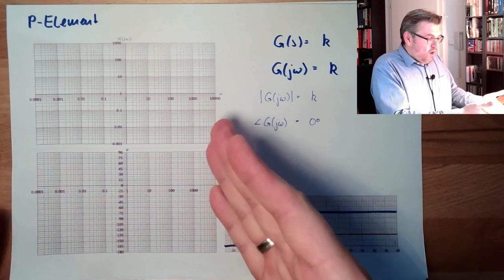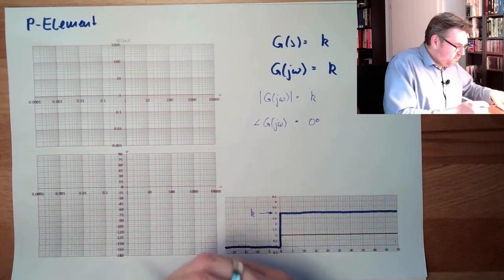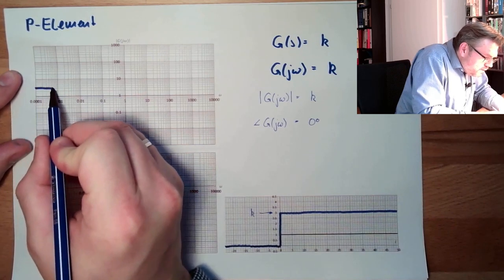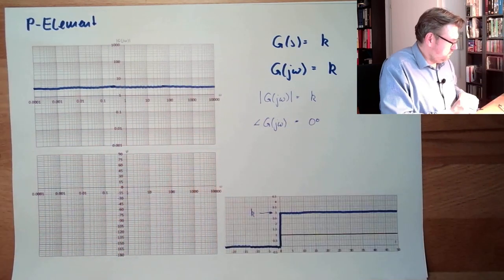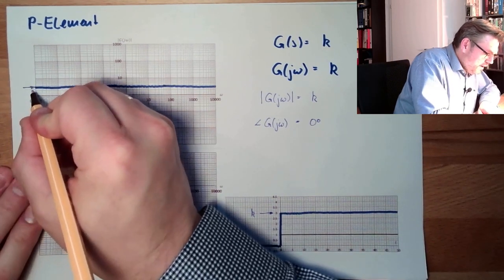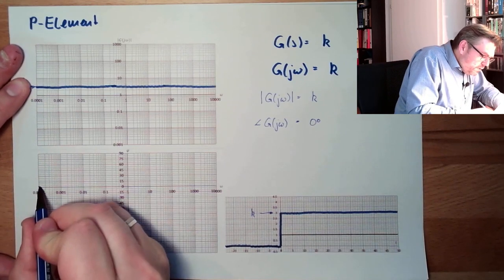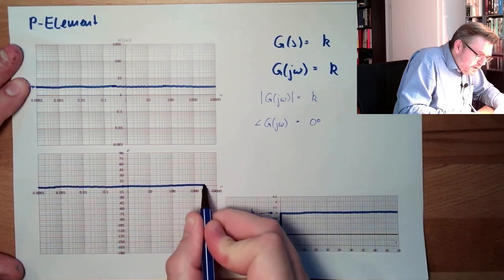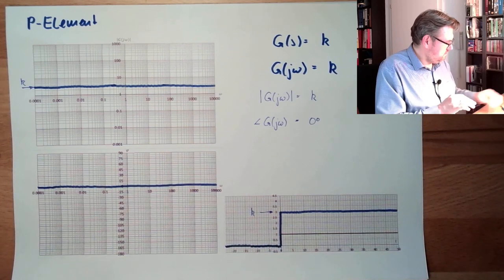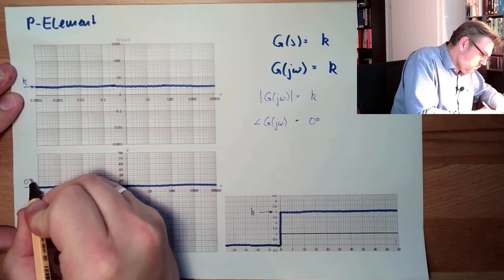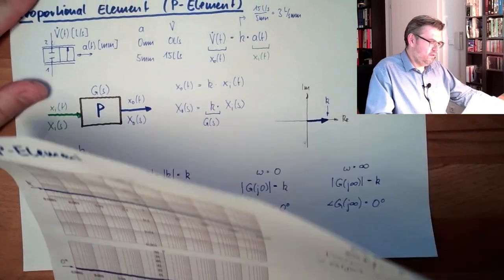Looking at the frequency response — the absolute value is always k. With k equal to three, it remains at three regardless of the frequency, constant at k. The argument is also straightforward — it will always remain zero regardless of frequency. This means there is no latency. That is the math and the Bode plot of the proportional element.